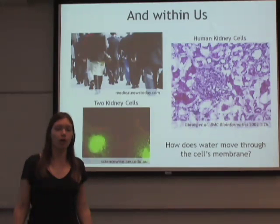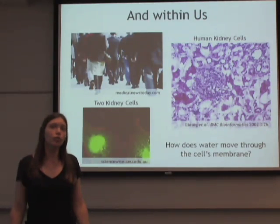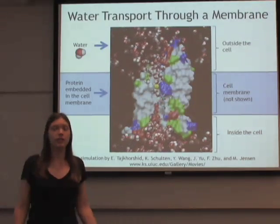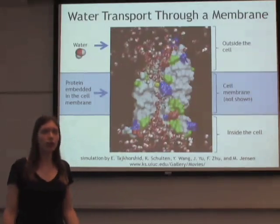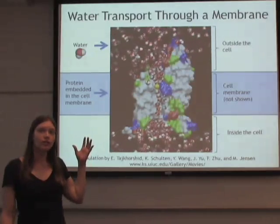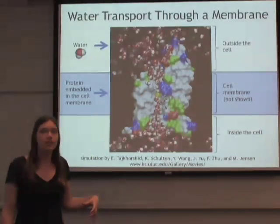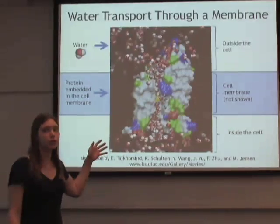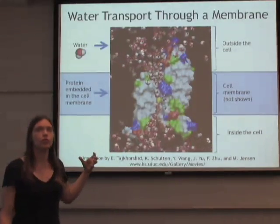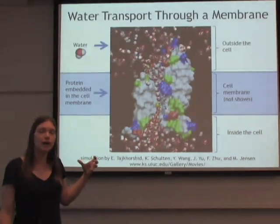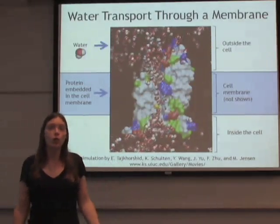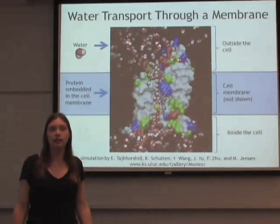And we can ask questions about these molecules. Like, how does water move through a cell's membrane in the kidney cell, for example? And then we can simulate what this looks like — where we have water, these red and white molecules moving from the top, which is outside of the cell, to the bottom, which is the inside of the cell. And we can even label one of these molecules yellow in order to see exactly where it's moving. It's moving through this protein that's embedded in the cell membrane. And this work was part of the work that won the 2003 Nobel Prize in Chemistry.